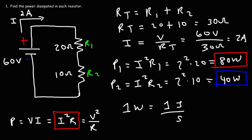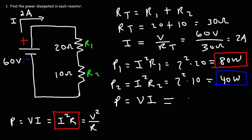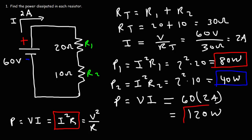That's the basic idea behind power dissipation. Now let's calculate the power delivered by the battery. We're going to multiply the voltage by the current, because we don't know the resistance of the battery. The voltage of the battery is 60 volts and the current flowing from it is 2 amps, so 60 times 2 equals 120 watts. Notice that the power delivered by the battery equals the sum of the power dissipated by the two resistors — this is in line with the law of conservation of energy.